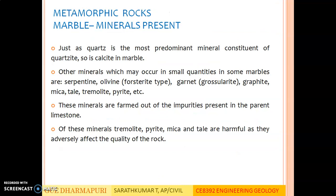Minerals present in marble. Just as quartz is the most predominant mineral constituent of quartzite, so is calcite in marble. In marble, the most predominant mineral constituent is calcite. Other minerals which may occur in small quantities in some marbles are serpentine, olivine, garnet, graphite, mica, talc, tremolite, pyrite, etc. These minerals are formed out of the impurities present in the parent limestone.